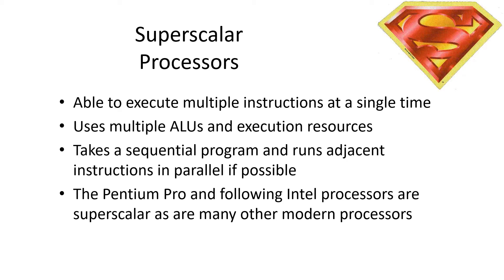Superscalar processors have the ability to execute multiple instructions at the same time. It's an example of micro-parallelism — parallelism that occurs without the programmer having to be aware of it. As instructions are fetched from memory, the machine picks up multiple instructions at the same time. If the instructions don't have hazards and aren't connected in any way, they'll execute in parallel. This requires multiple ALUs and multiple execution resources to make it work, but it runs with regular programs that aren't written for parallelism. At any time, if two adjacent instructions can be executed in parallel, it will do so.